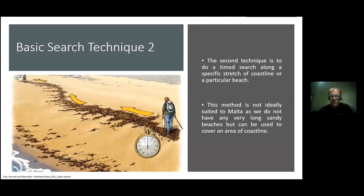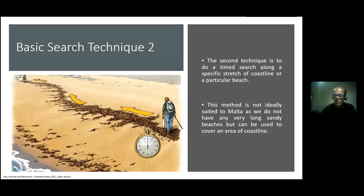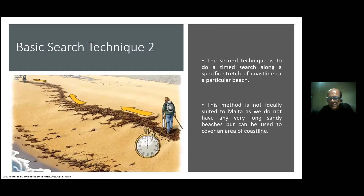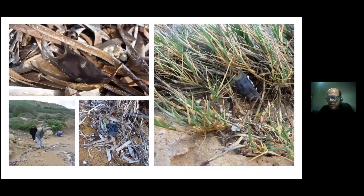The second technique is to do a timed or specific stretch search along a length of coastline or beach. In Malta, most of our beaches and coastline are relatively small. In the UK or on the coastlines of France or Sicily where beaches can stretch for several kilometres, it would not be practical to walk for three to five kilometres without a particular technique. The approach here is to cover one area in one direction for a set duration of time, then repeat in another direction for the same duration. Through this method you can often encounter many different types of egg cases.